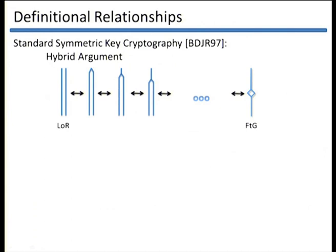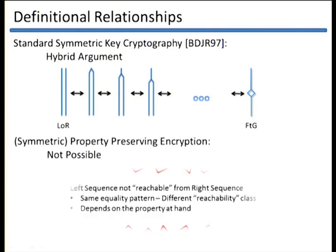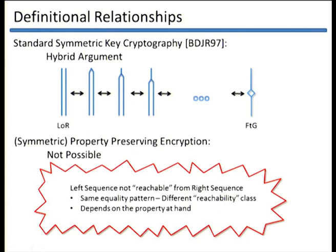Initially in our work, we tried to prove using a hybrid argument that these two notions were equivalent — as was done for the standard symmetric-key notion. However, we discovered, surprisingly, that this is not possible for property-preserving encryption. The intuition is that in the left-or-right security game, the left sequence might not be reachable from the right sequence using only one-message changes, depending on the property at hand. We say these sequences have the same equality pattern but belong to different reachability classes.